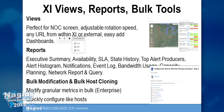With reports, XI has executive summary, availability, and an SLA report in the Enterprise Edition for reporting on custom SLAs. There's also state history, top alert producers, alert histogram, notifications, event log, and bandwidth usage. Capacity planning in the Enterprise version projects future usage based on historical data collected over four years of retention. You can visualize and report on that data, and integrated with Network Analyzer, you can do network reports and network query reports.